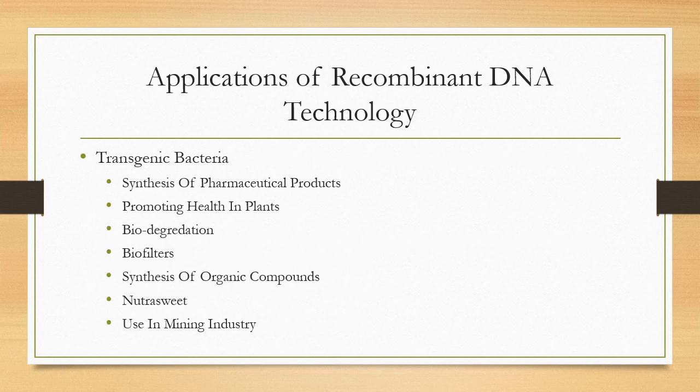We will talk in detail about the applications of recombinant DNA technology. First we will talk about transgenic bacteria. Bacteria with foreign DNA are called transgenic bacteria. Recombinant DNA technology is used to produce transgenic bacteria, and these bacteria have different uses in our society. The first use is the synthesis of pharmaceutical products, because a foreign gene is replicated and expressed in these bacteria, and thus a large amount of protein product is obtained.